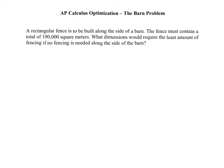This is another classic optimization problem. A rectangular fence is to be built along the side of the barn. This one has a little twist to it. Normally the ones you see give you an amount of material to use. This one's a little bit different. The fence must contain a total of 100,000 square meters. So this time we have what it can contain. We're not given anything about how much we can use. What dimensions would require the least amount of fencing if no fence is needed along the side of the barn? So we need to minimize.